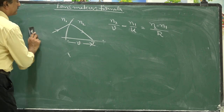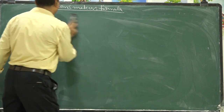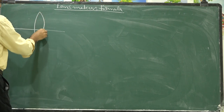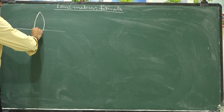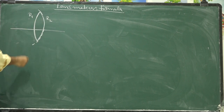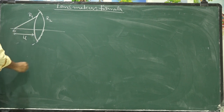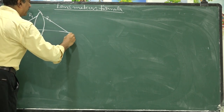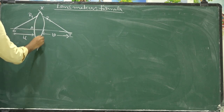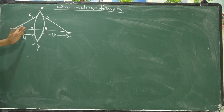Based on this refraction condition, we derive the Lensmaker's formula. Assume a lens bounded by two surfaces with radii of curvature R1 and R2. An object is at a distance U from the pole of the first surface, and an image is formed at a distance V from the pole of the second surface. Label the first surface XAY and the second surface XBY.